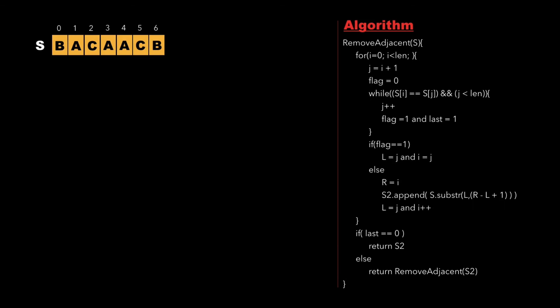Now let's have a look at the approach to solve this problem. Let's consider a string 'bacaacb'. The algorithm to solve this problem first calls the remove adjacent function from a main function. We declare a string s2, store the length of the string in a variable called len, initialize l to 0, and also declare variables called r, flag, and last, initializing last to 0.